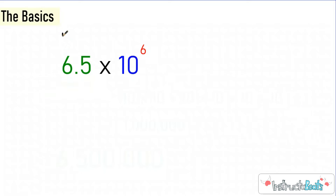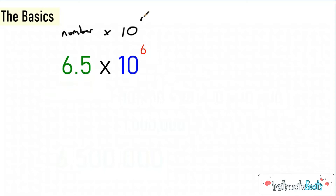Every scientific notation is going to have a number multiplied by a power of 10. We're going to have an exponent where the base is 10 and then some sort of exponent up here — we'll just call that n. This is the form that all standard form is written in: a number multiplied by a power of 10.